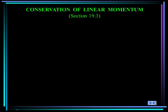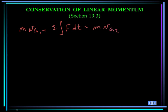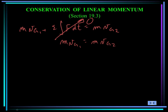Let's recall the linear impulse and momentum relationship. It's the mass times the velocity of the mass center at state 1, plus the sum of the integral of forces over time, equals the mass times the velocity of the mass center at state 2. If all the linear impulses are zero, then momentum must be conserved: mass times velocity of the mass center at state 1 equals mass times velocity at state 2. This is the conservation of linear momentum, used when linear impulses are small and can be neglected.